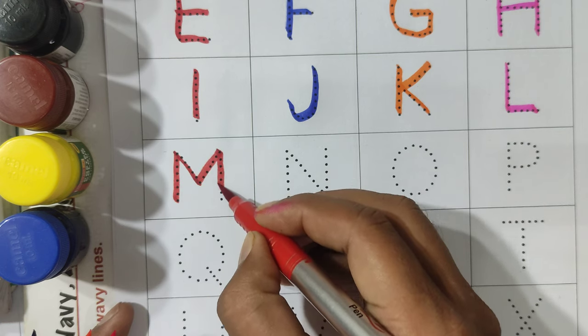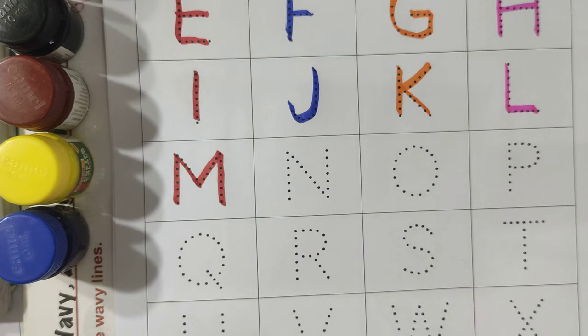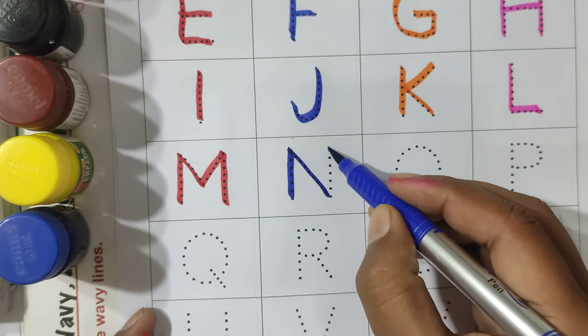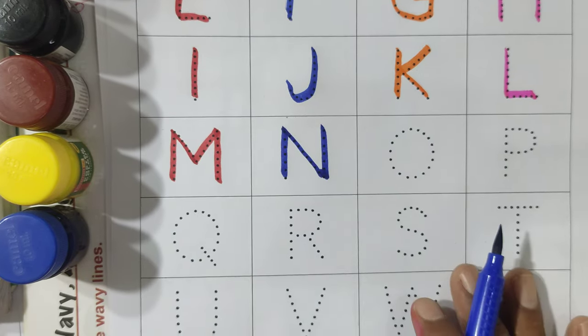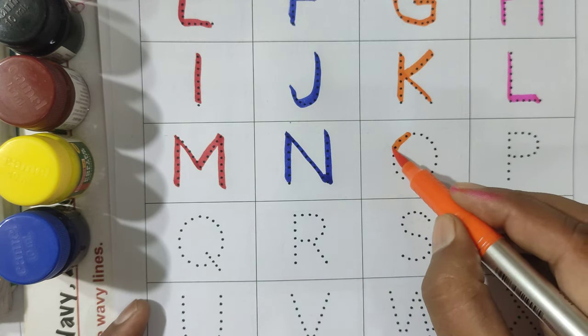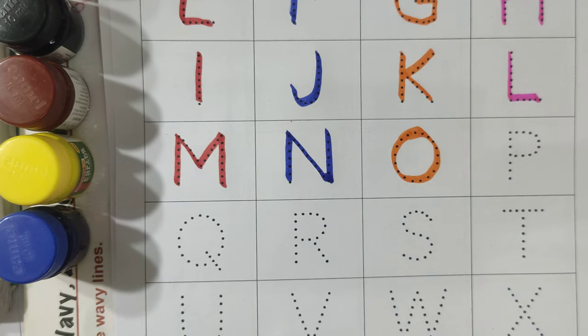M for Monkey. M for Monkey. N, N for Nest. N for Nest. O, O for Owl. Owl means Ullu.